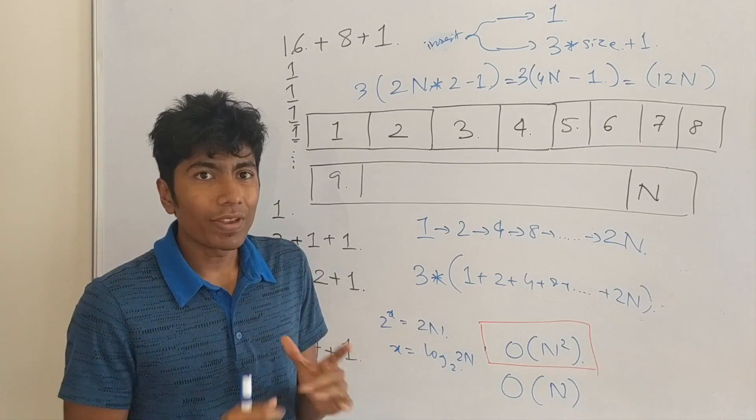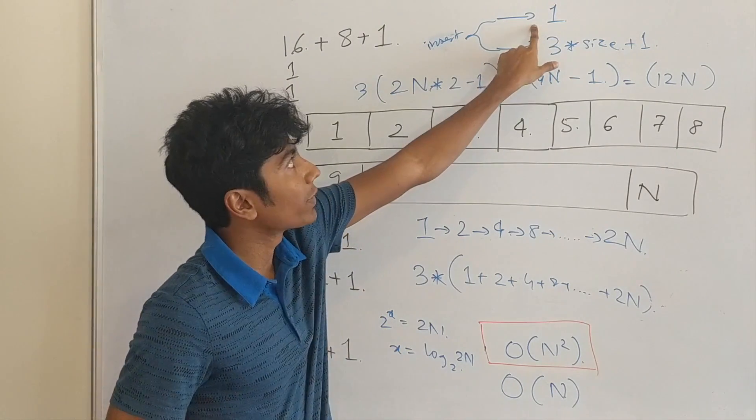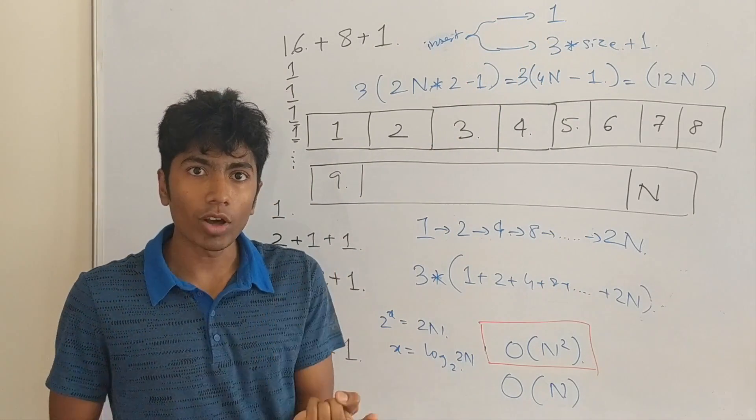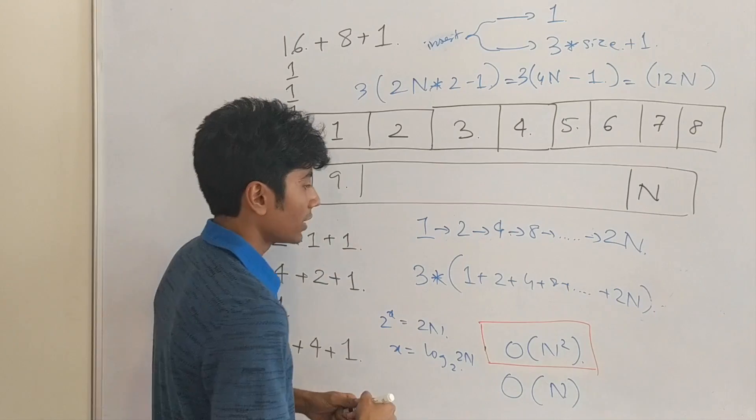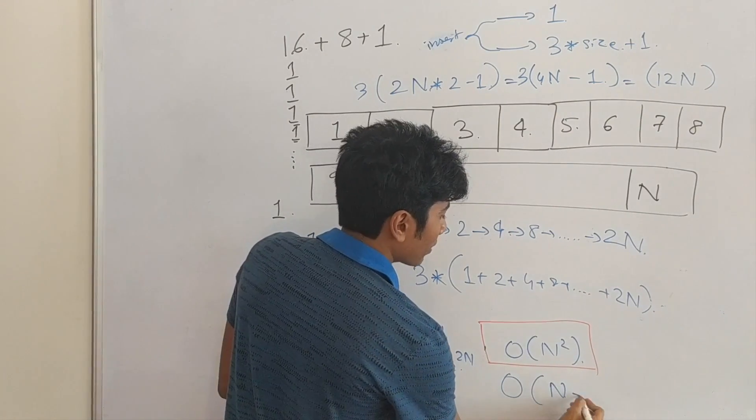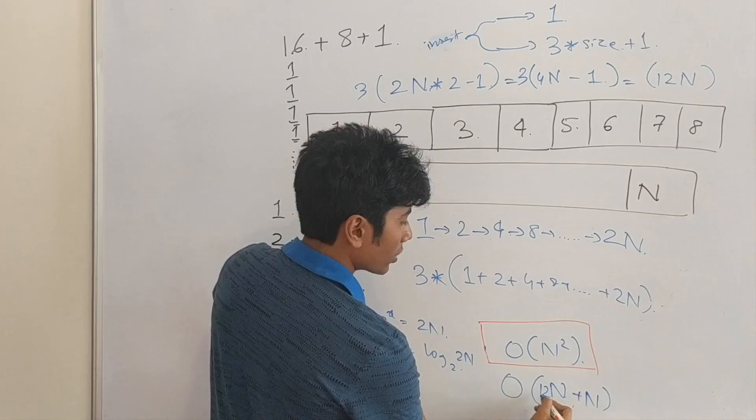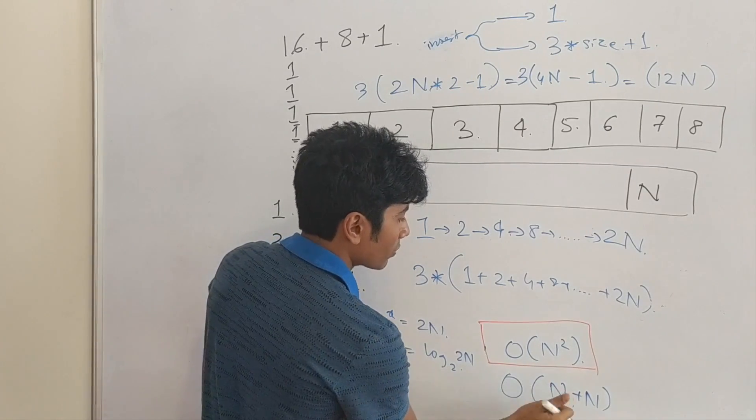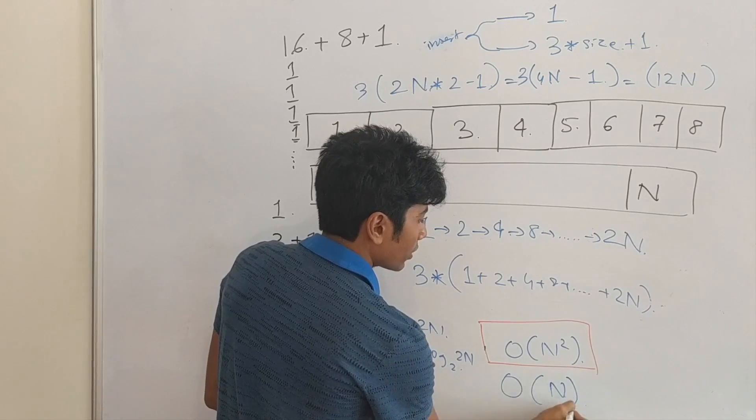It gives you order n time complexity for n insertions in that array. Of course, we haven't taken one thing into consideration, which is, what happens if it just takes one operation? Well, it's easy, because if it's taking one operation and you have n inserts, then it's going to be order n plus n. So, you can put it 12n plus n, which is just 13n. Again, the constant factor is gone. And, it turns out to be order n.